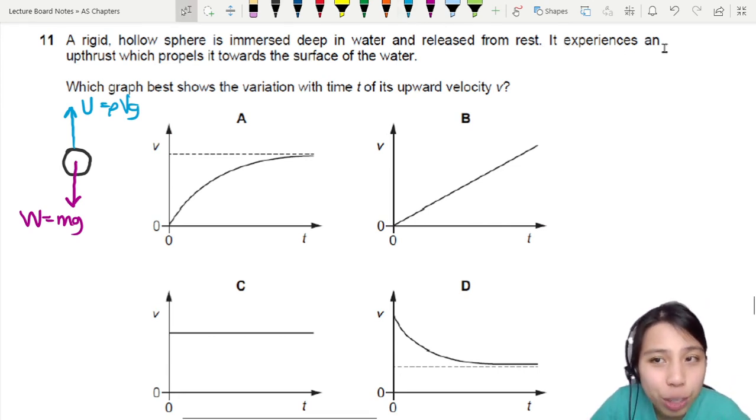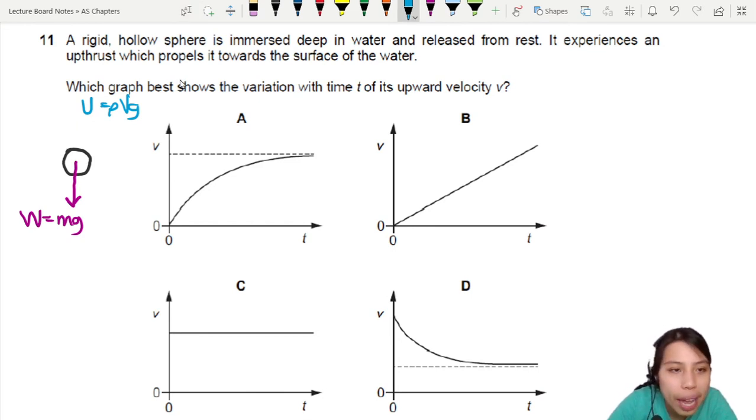But here, it experiences an uptrust force which propels it towards the surface of the water. So that tells me that this is not balanced, at least in the beginning. So actually, it looks like uptrust force is going to be much bigger. So where's the net force? Upwards. So this thing will start to move up with a certain velocity upwards.